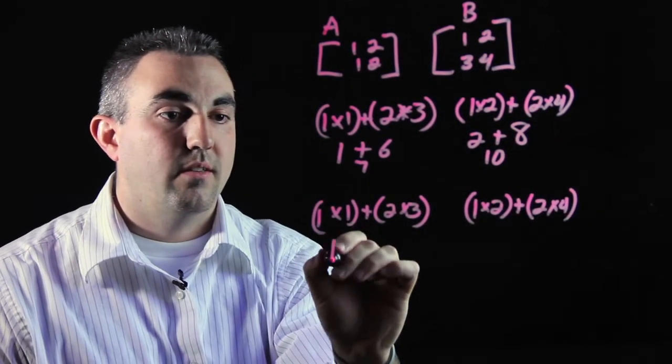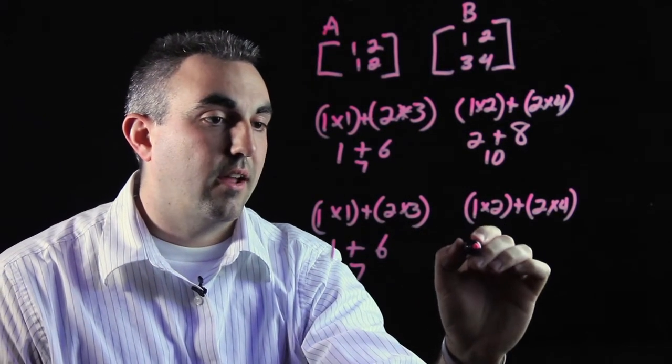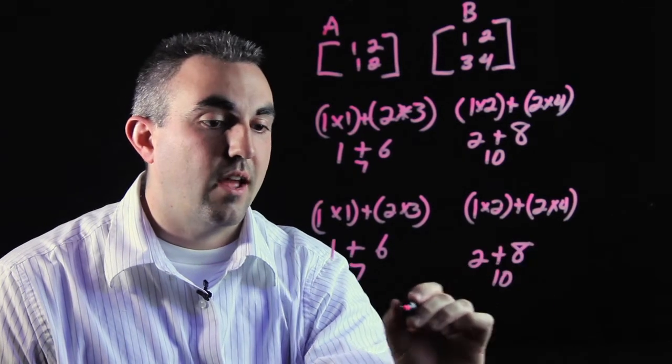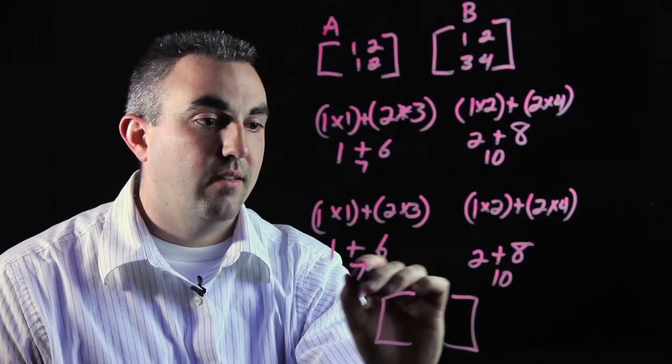You're going to add those together. This is going to give you 1 plus 6, which is 7. This side is going to give you 2 plus 8, which is 10, making your answer box 7, 10, 7, 10.